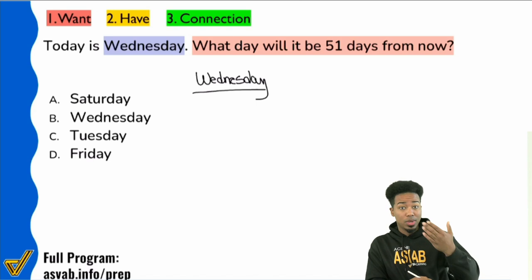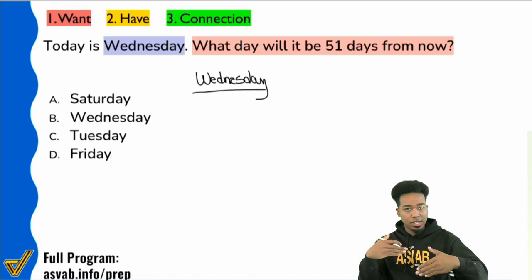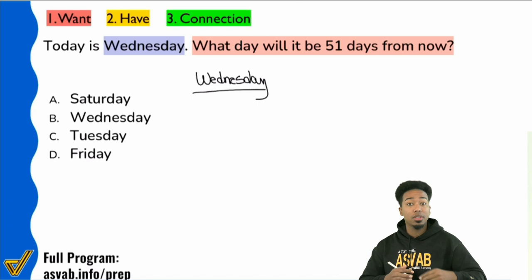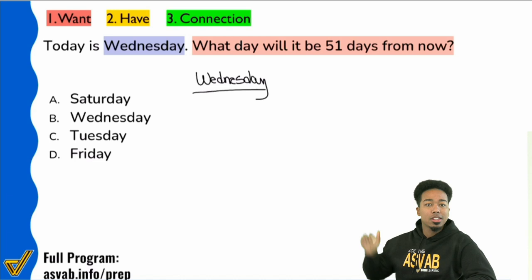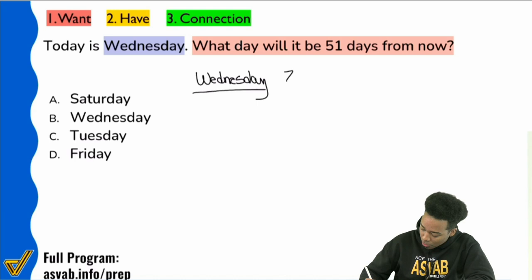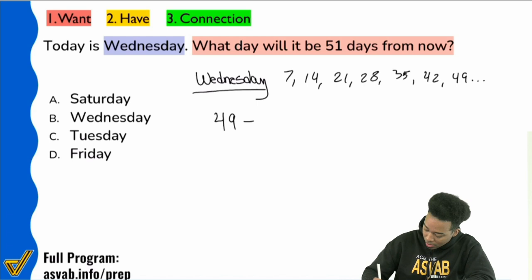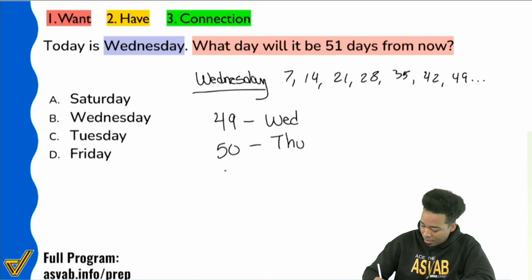What's the closest multiple of seven we can get to 51? If we can get close to 51, we can avoid counting one by one. Count by sevens: 7, 14, 21, 28, 35, 42, 49 — each of those days from now are all going to be Wednesday. So on day 49, that's Wednesday. We want 51: day 50 is Thursday, day 51 would be Friday. Very straightforward, very quick.